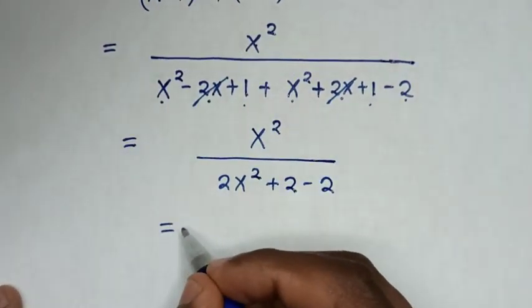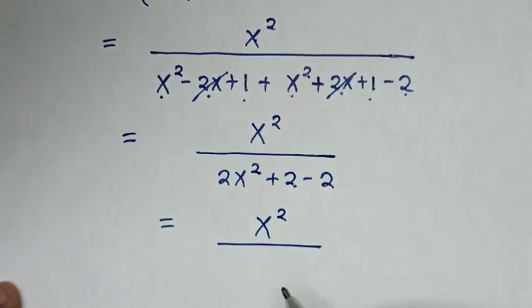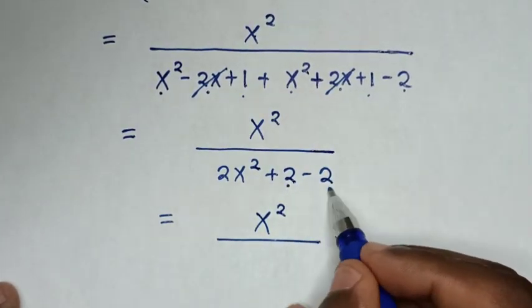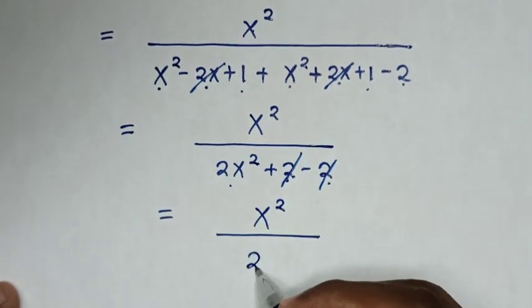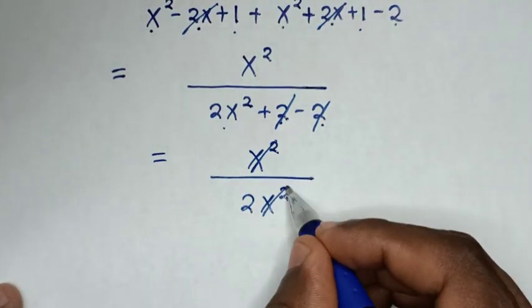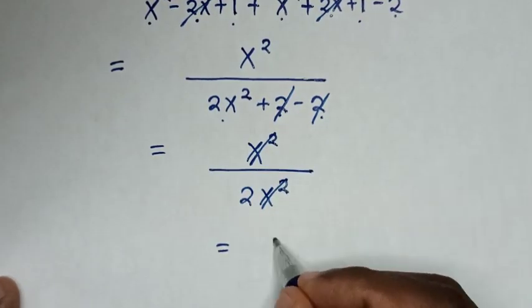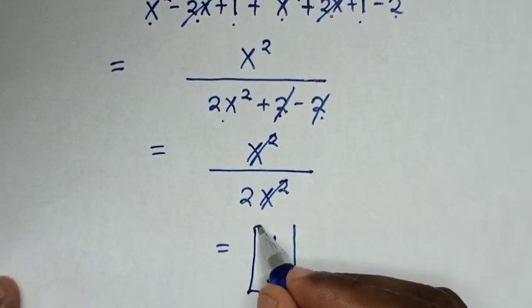Then it will be equal to x square over... In here, 2 minus 2 is 0, so it will cancel. Then it will be 2x square. This x square and this x square will cancel, so it will be equal to 1 over 2. Therefore, a half is our final answer.